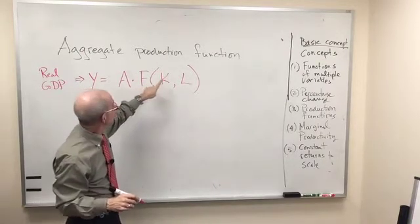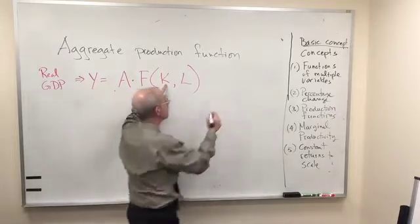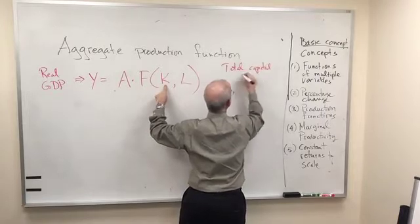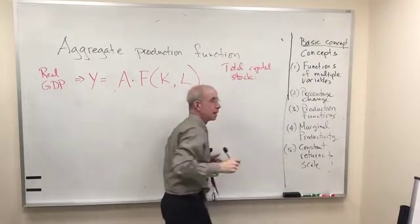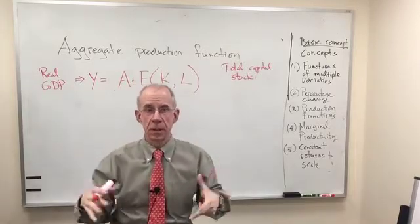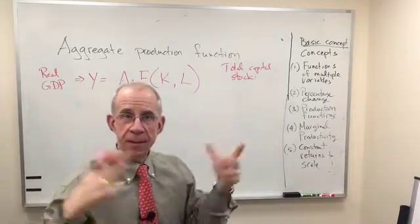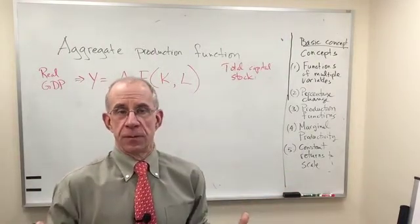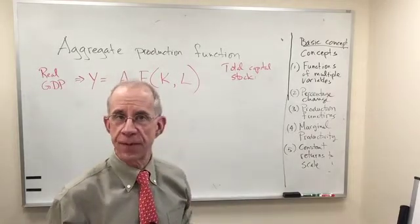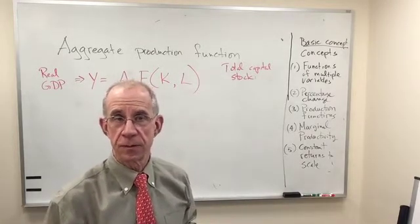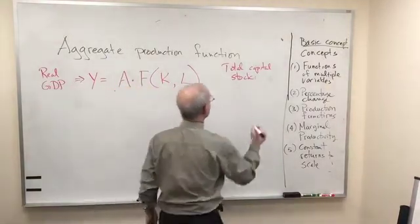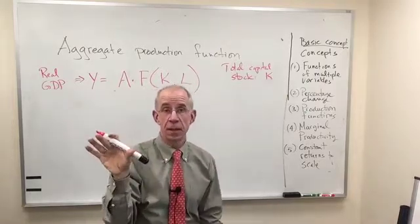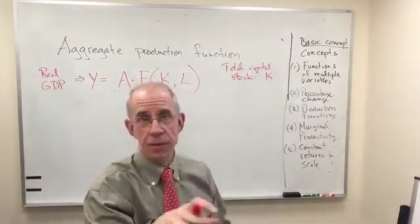So this is the total capital stock. Now you can think of that as the infrastructure, the factories, the buildings, all the different physical attributes, stuff that is available to use to produce goods and services. And that's denoted by K. And we're not going to make a distinction here between the use of capital in one sector versus the other, it's just the total amount.